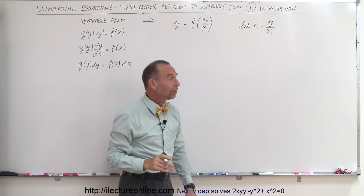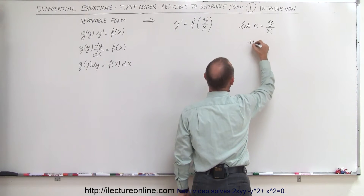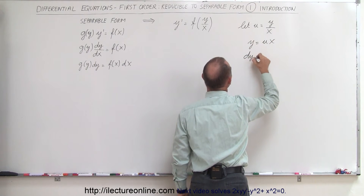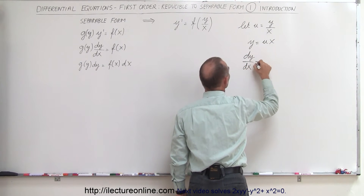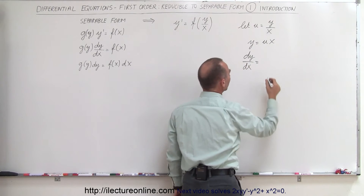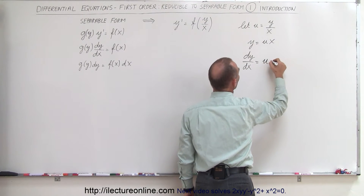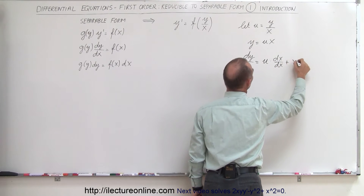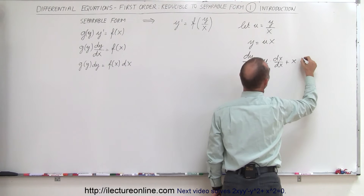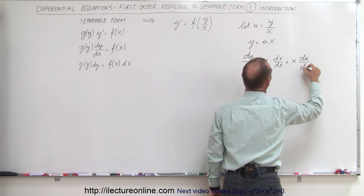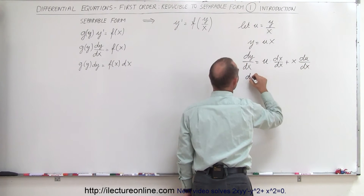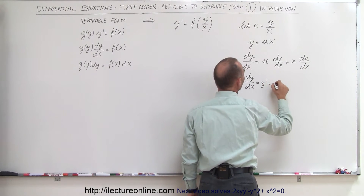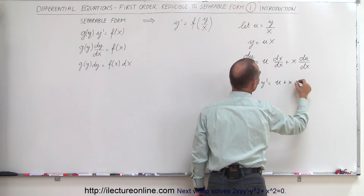We solve this substitution for y, so y is equal to u times x. Then we can find dy/dx — since this is a product, we use the product rule — so it's the first times the derivative of the second, which is dx/dx, plus the second, which is x, times the derivative of the first, which is du/dx. In other words, dy/dx equals u plus x·(du/dx).